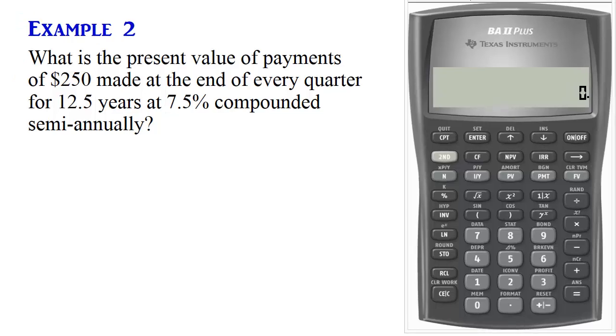Example 2: What is the present value of payments of $250 made at the end of every quarter for 12.5 years at 7.5% compounded semiannually?